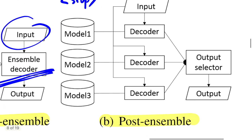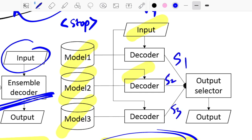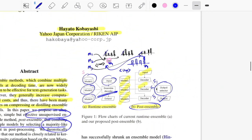The author proposes post ensemble as a post-processing step. You have pre-trained or fine-tuned models 1, 2, and 3; you pass the same source sentence to each independently and get outputs S1, S2, and S3. A post-processing component called the output selector then decides which of S1, S2, or S3 is most appropriate and selects it as the final summary.